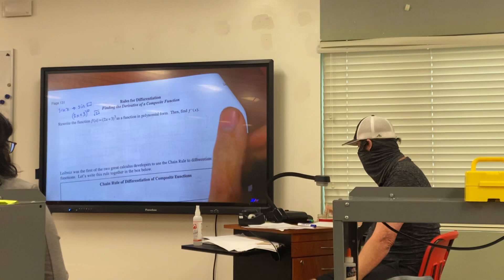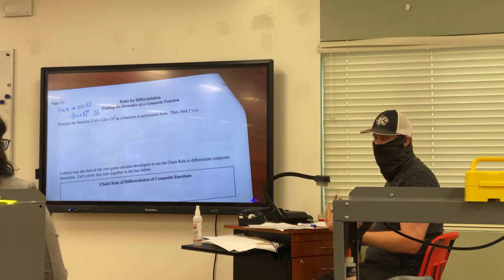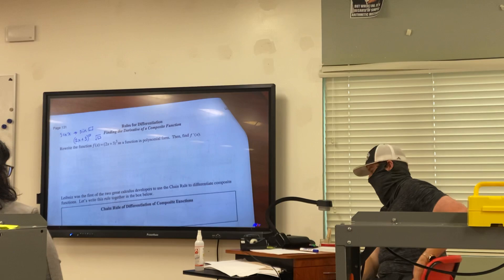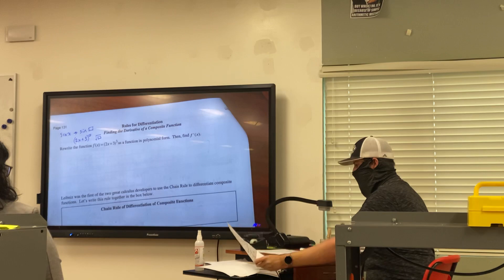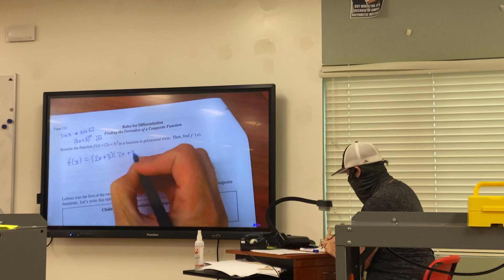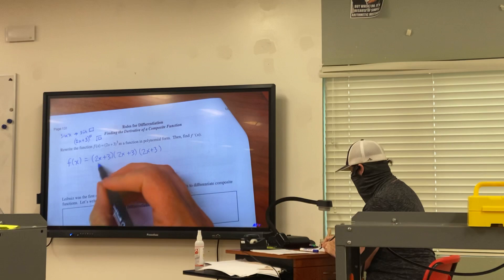We're going to kind of do the same concept that we've been doing, looking at the polynomial and rewriting it. So if we had this 2x plus 3 and we wanted to take that derivative, so far everything we've been doing is just expanding it if we can. So this one, f of x equals, we'd write it as 2x plus 3 times 2x plus 3 times 2x plus 3 times 2x plus 3.